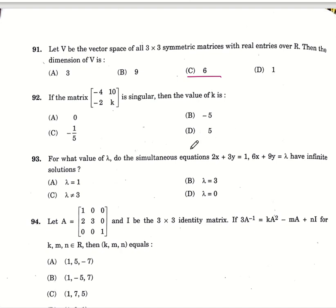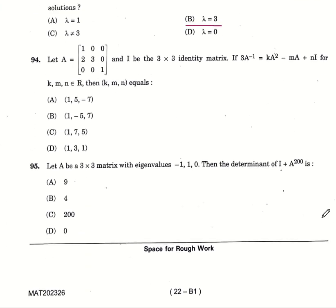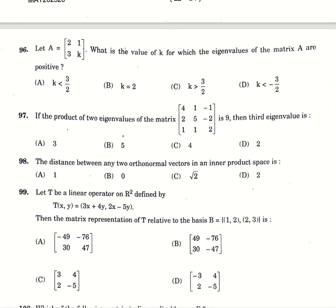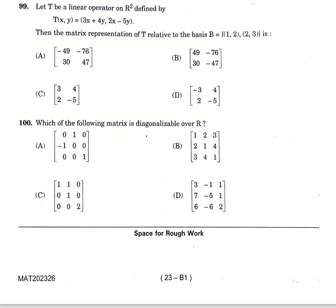A singular matrix is given, we have to find the value of K. Option is option number D, 5. Correct answer is option number D, 5. What value of lambda do the simultaneous equations have infinite solutions? Option number B, 3. Lambda is 3. A 3 cross 3 matrix is given in question number 94 and a condition is given which we solve to find the value of K, M and N. The correct answer is option number A, 1, 5 minus 7. 95, 3 cross 3 matrix is given. Consider 3 cross 3 matrix with eigenvalues minus 1, 1, 0. The determinant of I plus A power 200 is 0. 96th question, 2 cross 2 matrix is given where we have to find the value of K for which eigenvalues of matrix A are positive. Option number C, K is greater than 3 by 2. 97, if we have product of two eigenvalues as 9, what is the third eigenvalue for the given matrix? Option B, 5. The distance between two orthonormal vectors in inner product space is basically root 2, option number C.